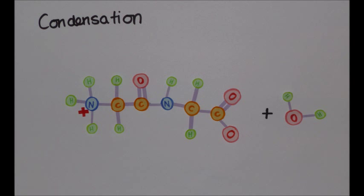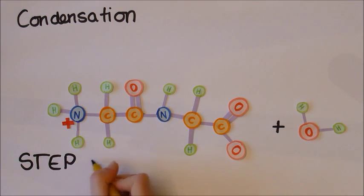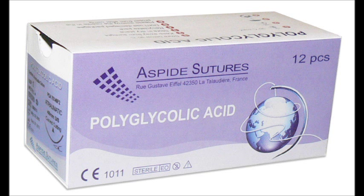A peptide bond is then formed. This can occur many times to produce a long polymer chain. These are step growth polymers. Step growth polymers are biodegradable. Polyglycolic acid is an example of a step growth polymer used to make dissolvable stitching.